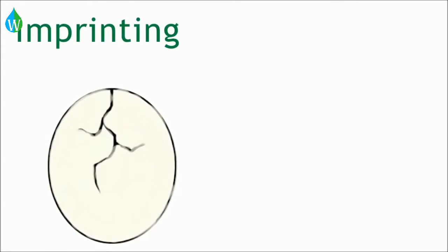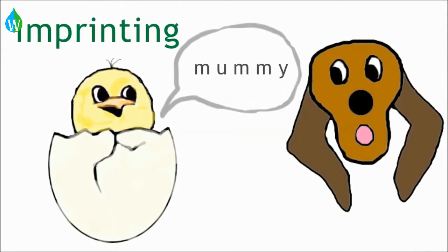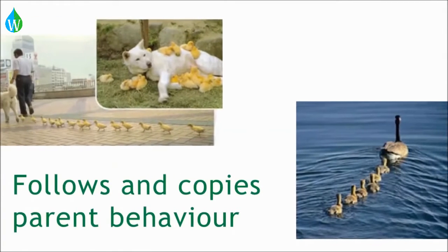Imprinting is another type of learned behavior, where a very young animal fixes its attention on the first thing it hears, sees, or touches. The animal then follows the object around, which is usually its parent.